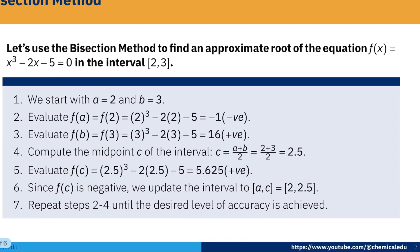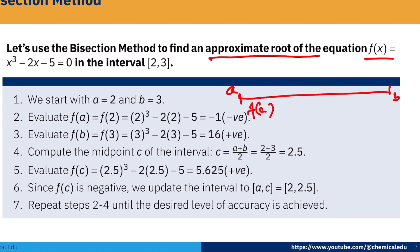Now here is the example. f(x) = x³ - 2x - 5, and we have to find the approximate root in the interval [2, 3]. First, we evaluate f(a) = f(2), which is negative, and f(b) = f(3) = 3³ - 2×3 - 5 = 16, which is positive. So the root lies between a and b.